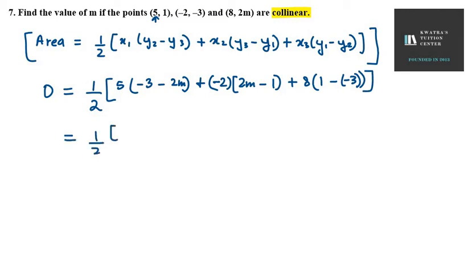So you have here half. Then you have 5. 5 into minus 3 is minus 15. 5 with minus 2m will be minus 10m. Then you have minus 2 with 2m, so it is minus 4m. Minus 2 with minus 1, so it is plus 2. Then 8 with 1 is 8. There is no use to multiply 8 with 1. What we can do is simplify this part. So 1 plus 3 is 4. 8 into 4 is 32.